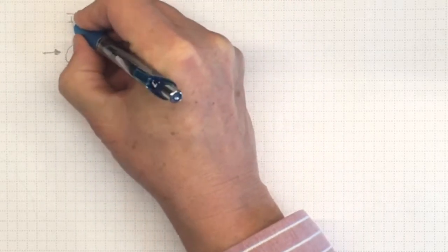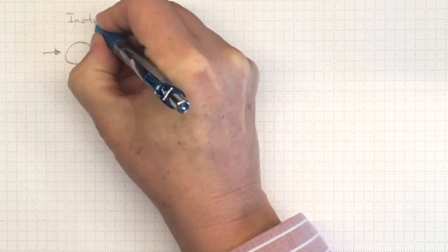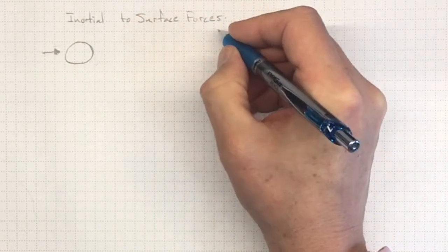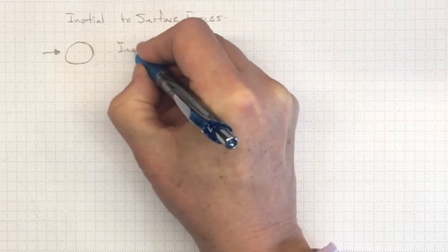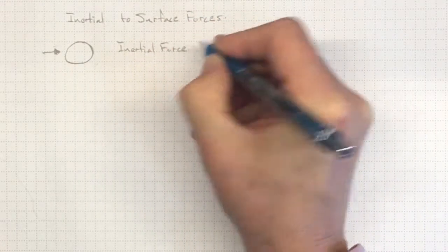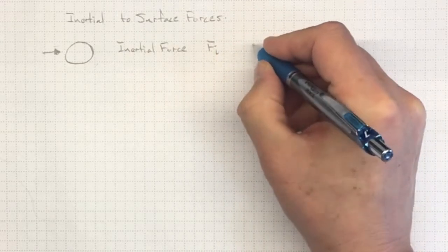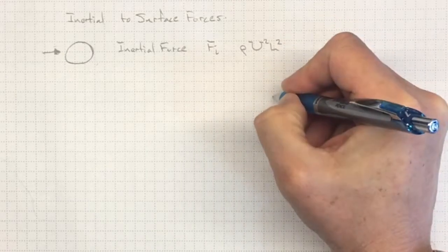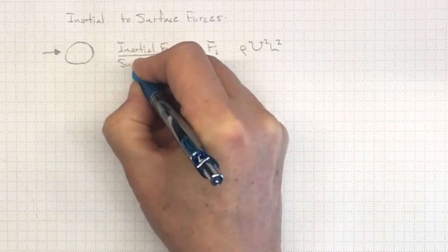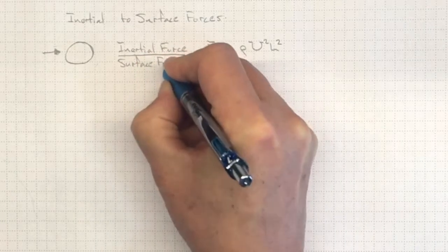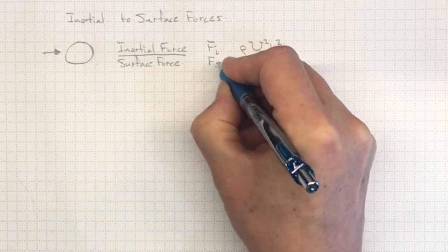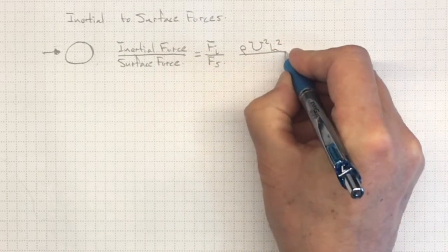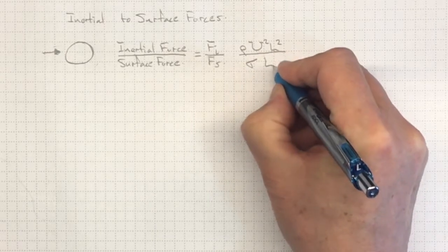So if we want to compare the ratio of inertial forces to surface forces, we need to reach back and get each of them. Our inertial force, we know from looking before, will look something like Fi, which will be proportional to the density, the velocity squared, and the length squared. If we compare that to a surface tension force, the Fs value that we came up with before looking at the effects of surface tension, then that will be proportional to the surface tension times the length scale.